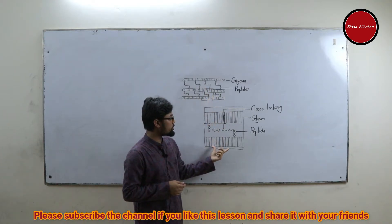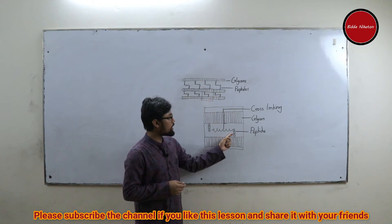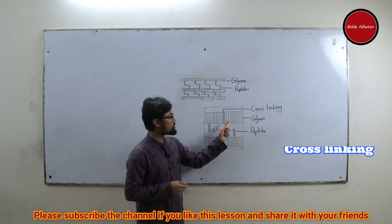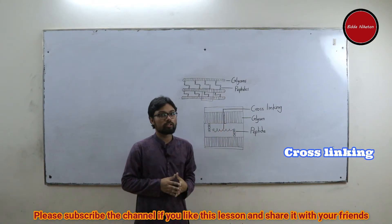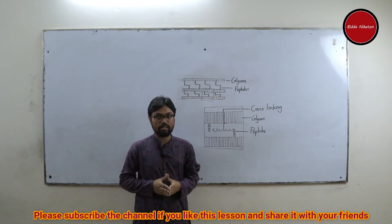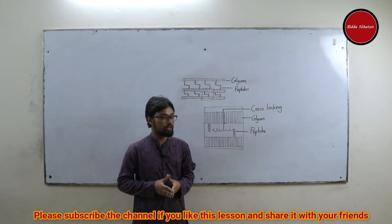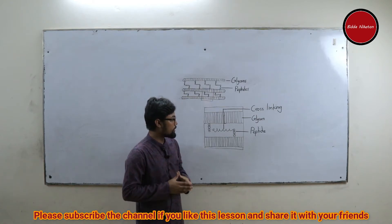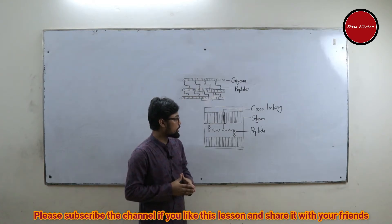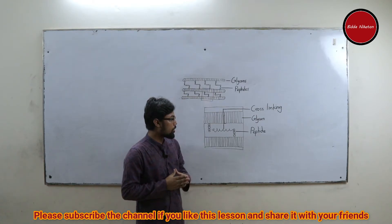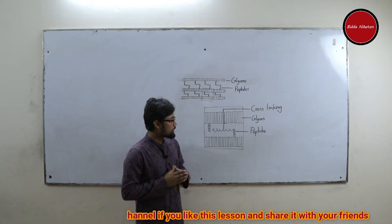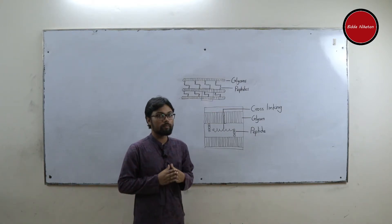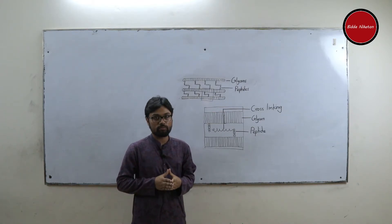In this zoomed version, we can also see that in between the ropes, there are some cross-linkings. The cross-linkings act as knots which put together the peptides. Without this cross-linking, the peptidoglycan structure will be more susceptible to injurious factors.